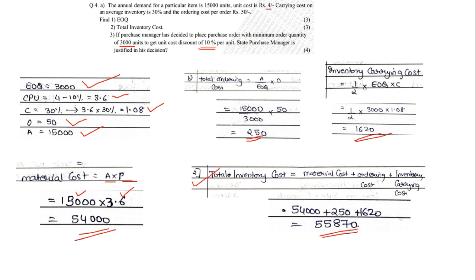Comparing: the previous total inventory cost based on the EOQ of 1118 units was 61,341.6 rupees. But if the purchase manager takes 3,000 units as the EOQ, the total inventory cost reduces to 55,870 rupees. So the final answer is yes — it is justified to go with the order quantity of 3,000 units. If the adjusted total cost is lower, the decision is justified; if not, it is not justified.